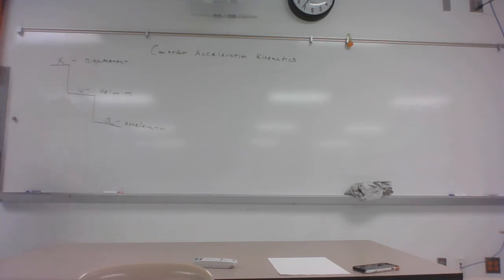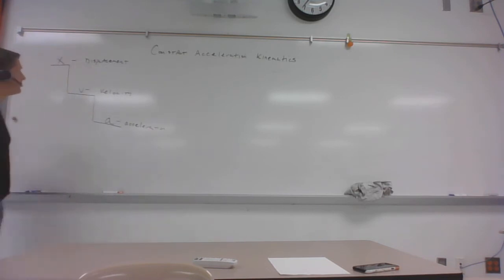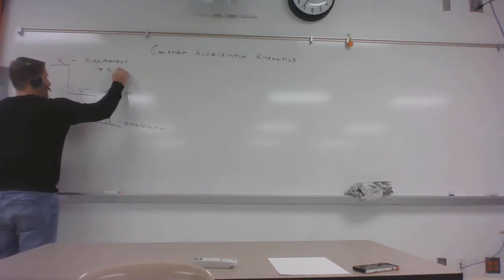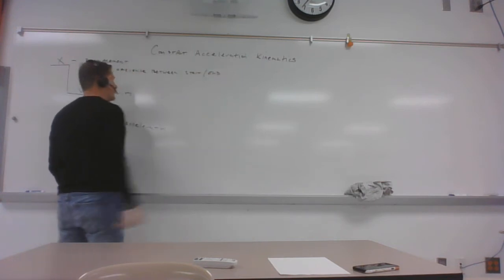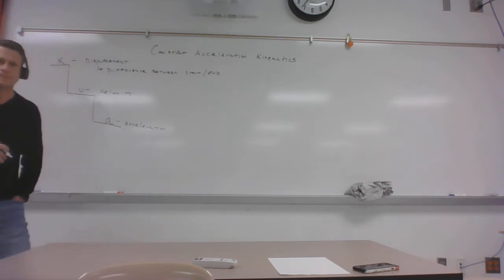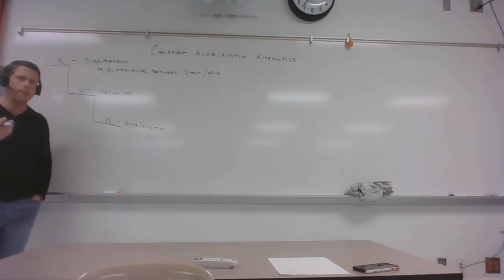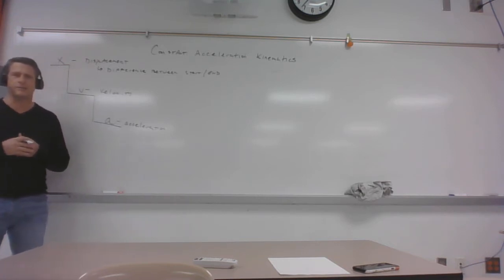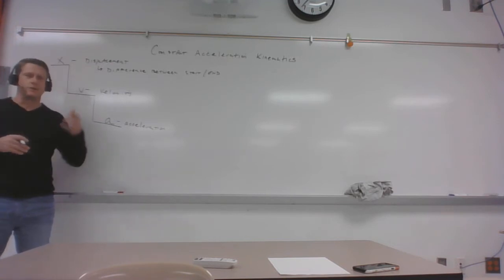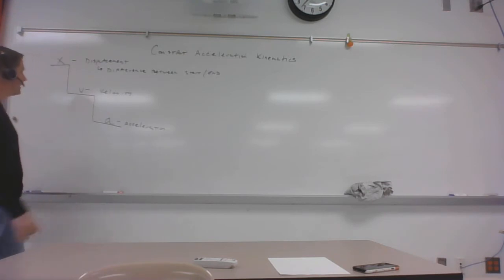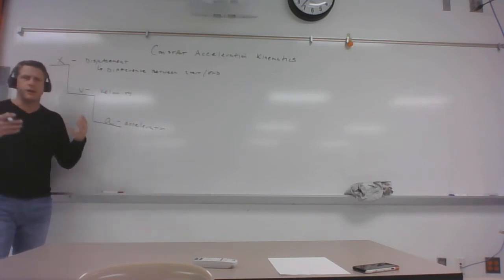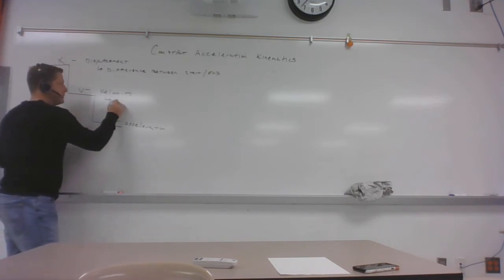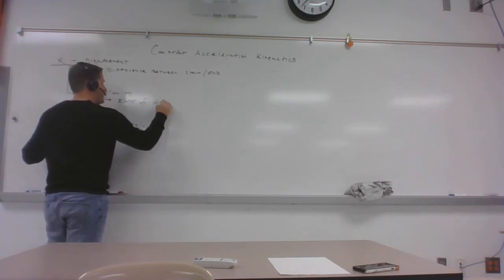These quantities are all related to each other. Displacement is the difference between where we start and where we end. Technically it's a vector quantity requiring both magnitude and direction, but most often we focus on the magnitude — the numerical difference between start and end. Velocity is also a vector, but again the magnitude is what we're most concerned with.